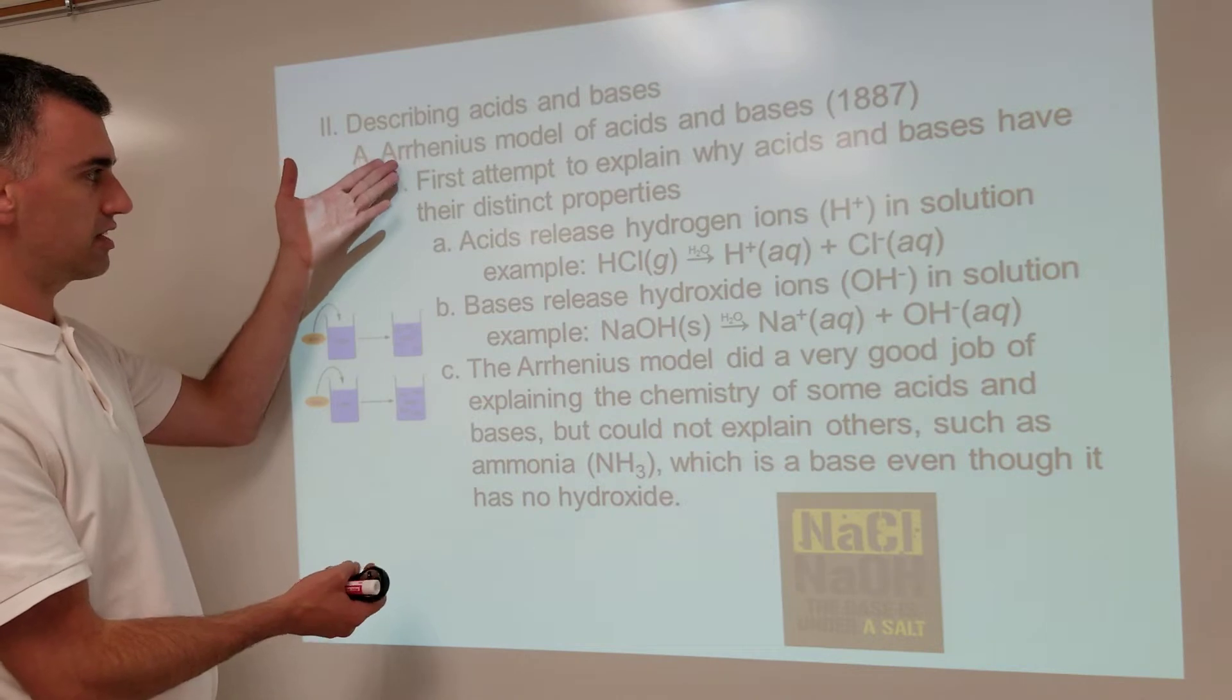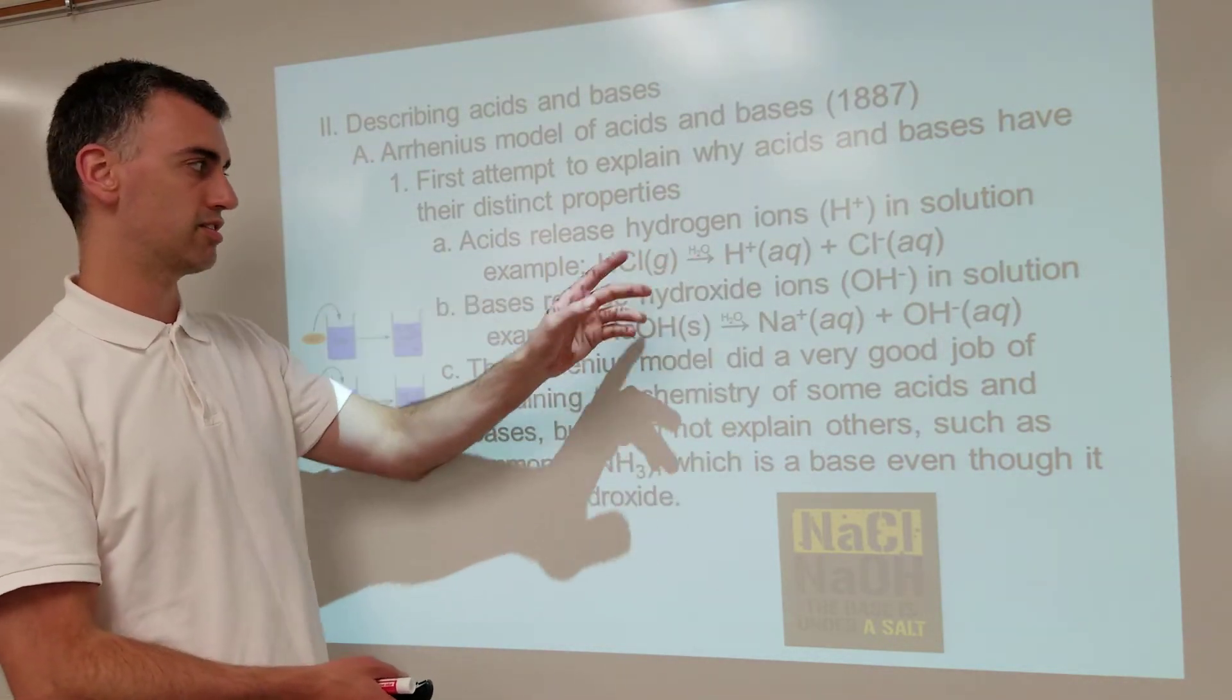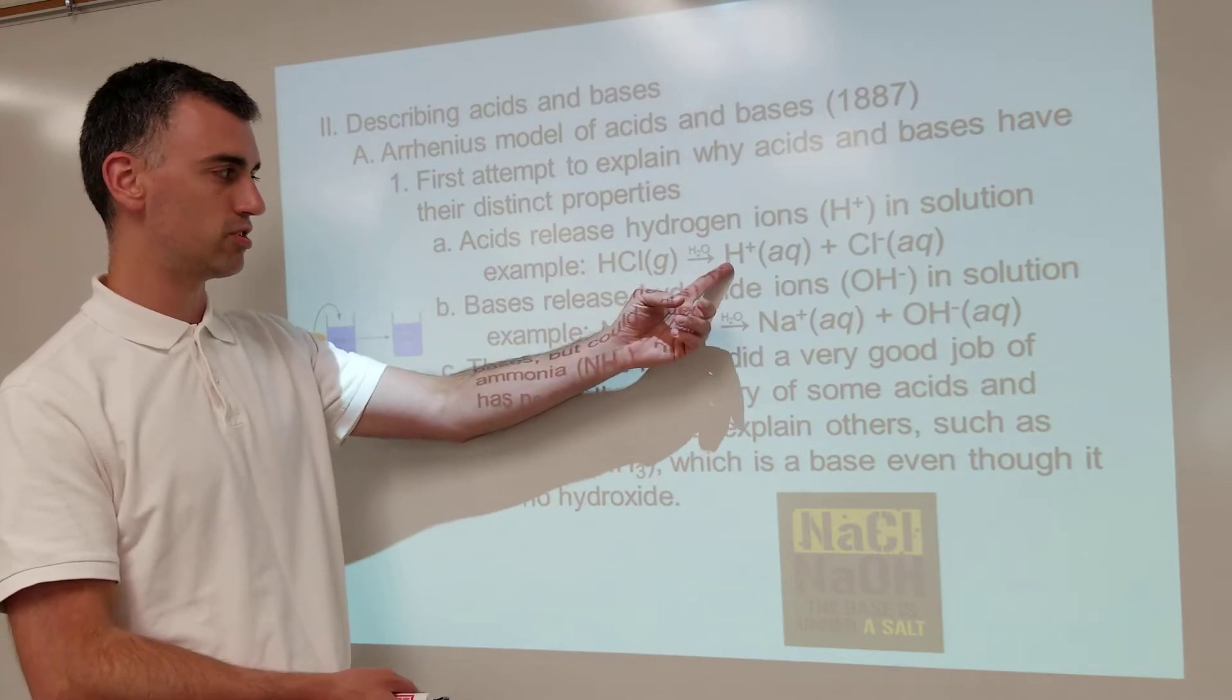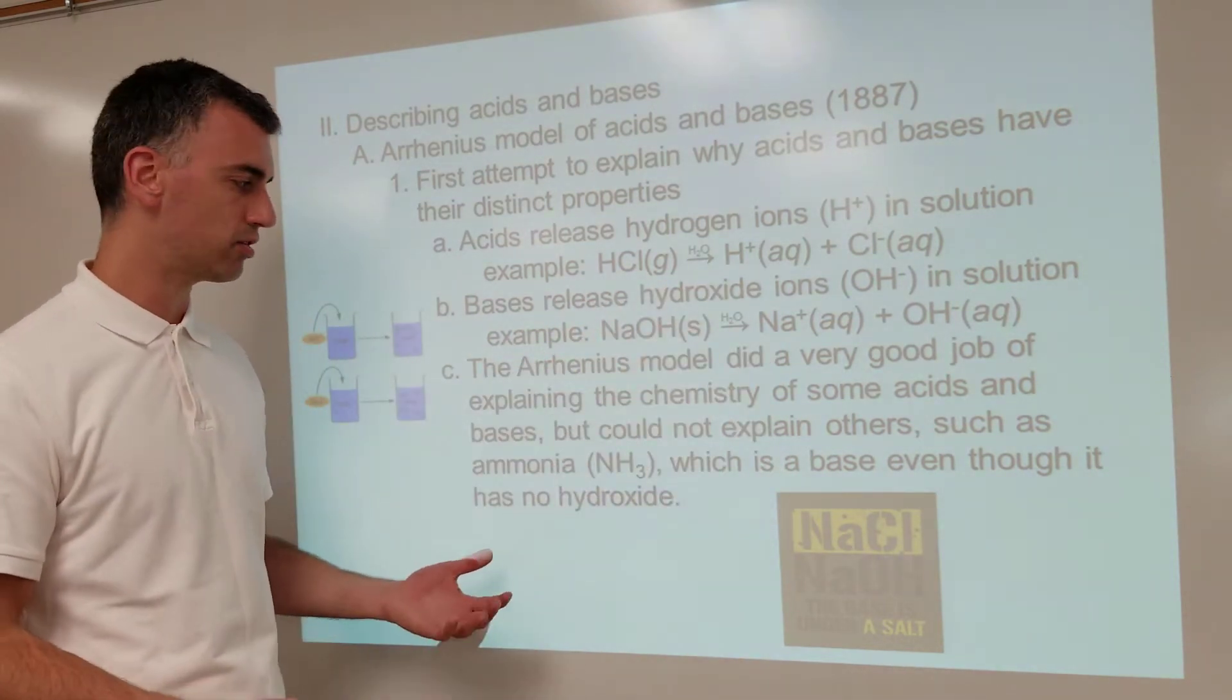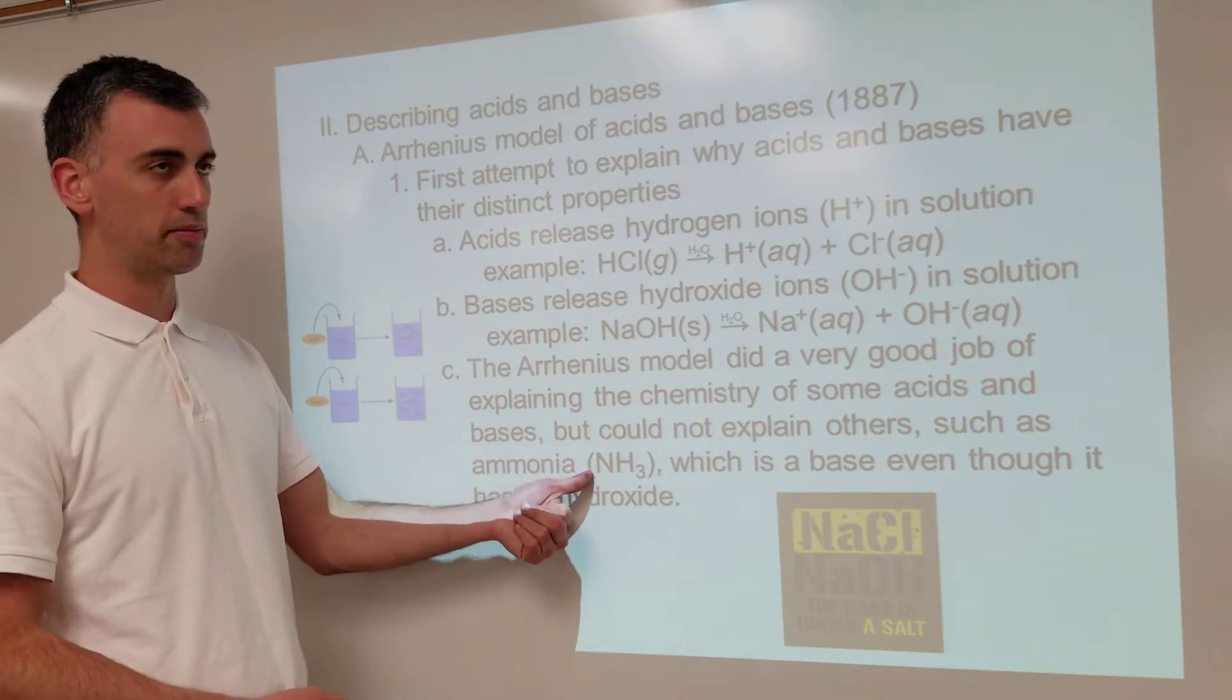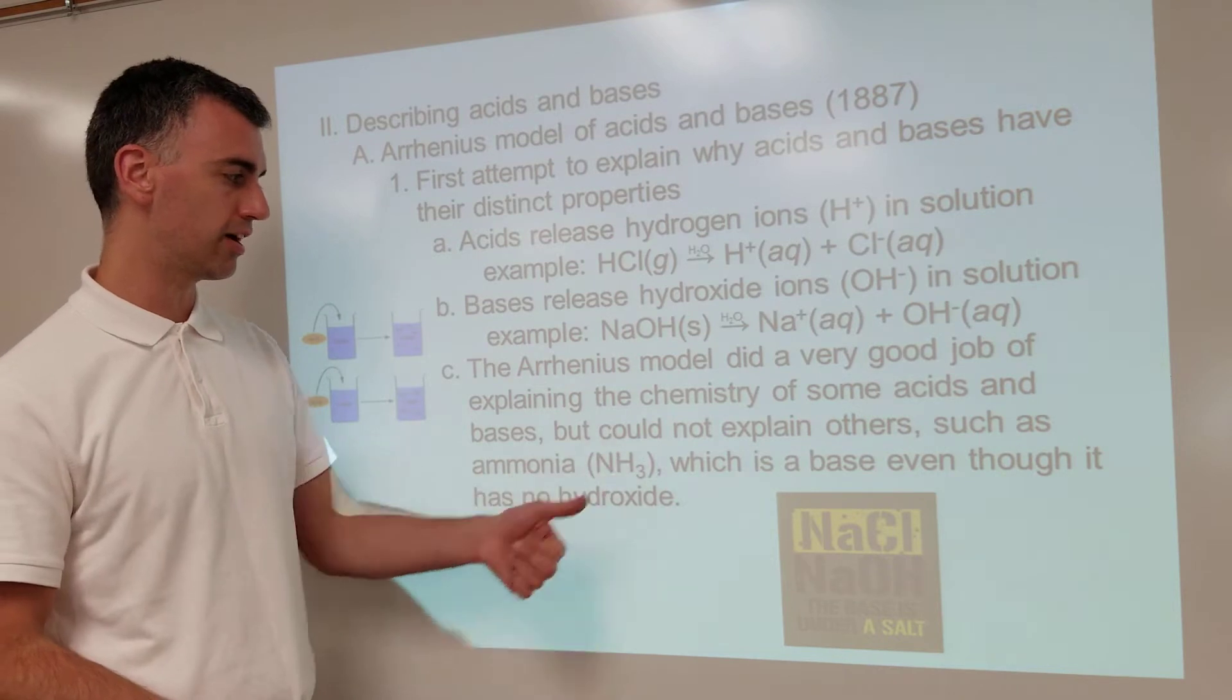The Arrhenius model says acids release hydrogen ion when they dissolve in water. Because they dissolve, they dissociate, they release hydrogen ions. Bases release hydroxide ions, which is fine, but there's certain basic chemicals that are the opposite of acids but don't have hydroxide, such as ammonia right here.